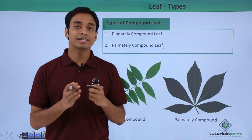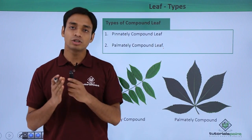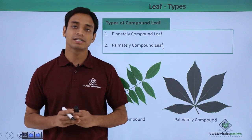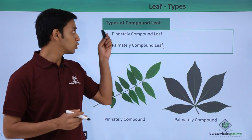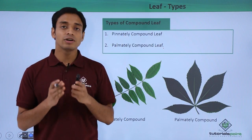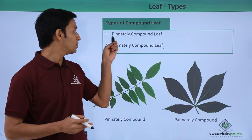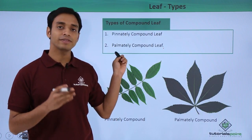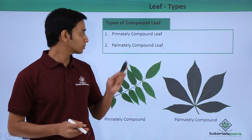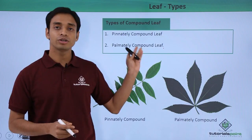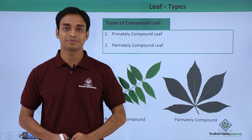So in this video we have talked about the different types of leaves. We have discussed the two different types: simple leaf and compound leaf. We have also talked about the two different types of compound leaf — those are the pinnately compound and the palmately compound leaf. I hope you have understood and liked this video. Thank you.